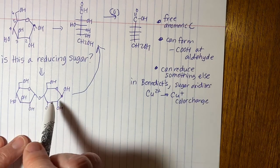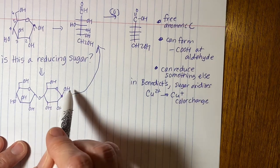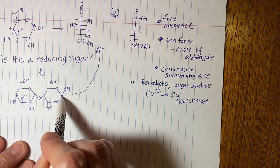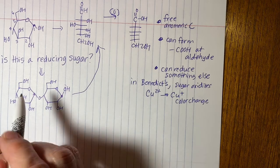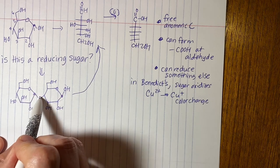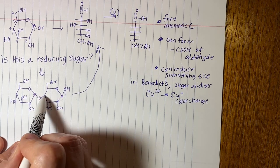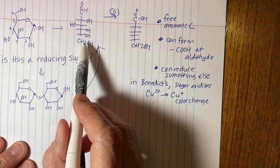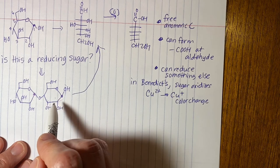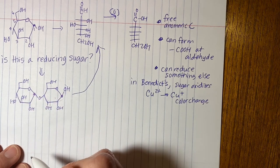So yes, this disaccharide is a reducing sugar because one of the rings has a free anomeric carbon. The other ring's anomeric carbon is there and it is not free. It's occupied with this glycosidic linkage. So this ring cannot open and become a linear form. But since this ring can, the whole thing is considered a reducing sugar.